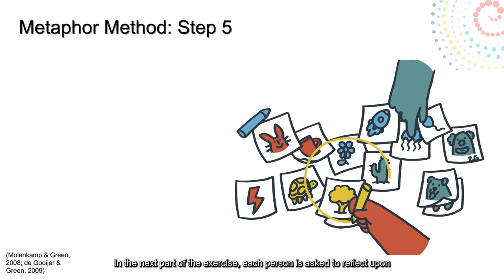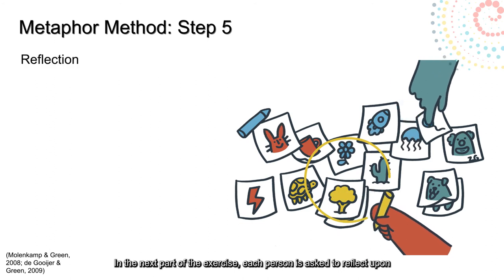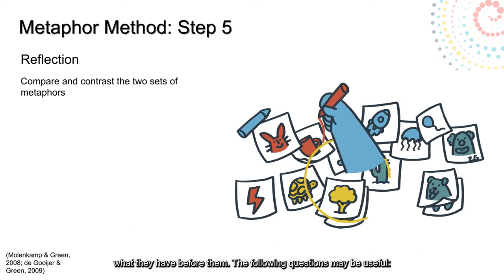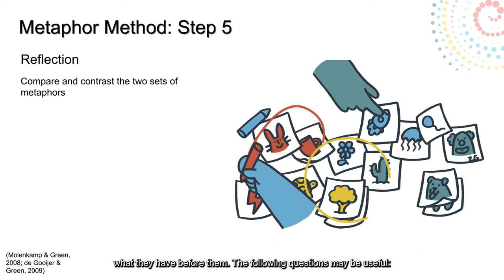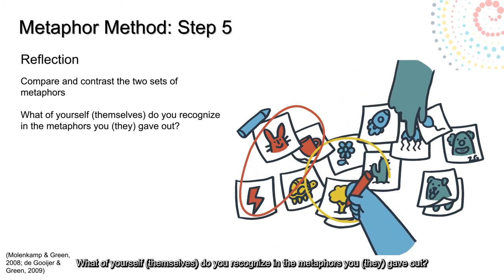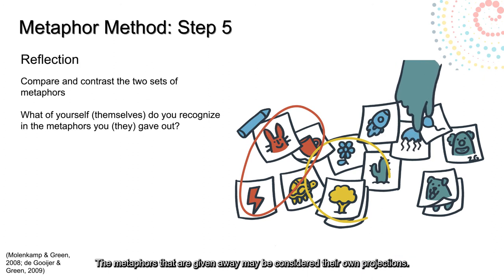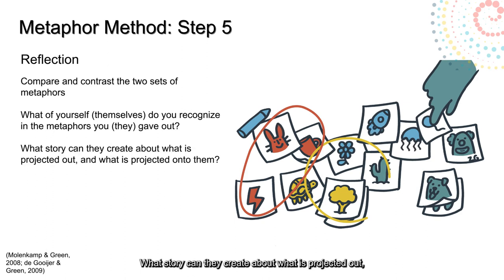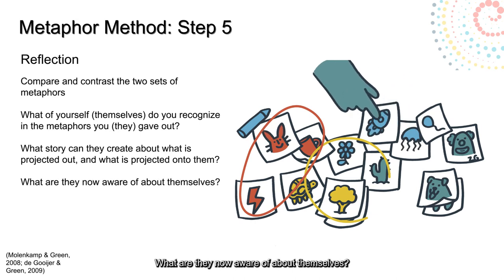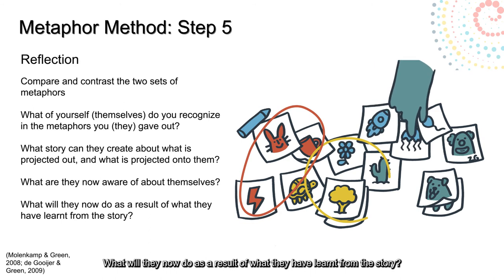In the next part of the exercise, each person is asked to reflect upon the two sets of metaphors they have before them — those they have given out and those they received. The following questions may be useful: What of themselves do they recognize in the metaphors they gave out? The metaphors that are given away may be considered to be their own projections. Second, what story can they create about what is projected out and what is projected into them? What are they now aware of about themselves? What will they now do as a result of what they have learned from this story?